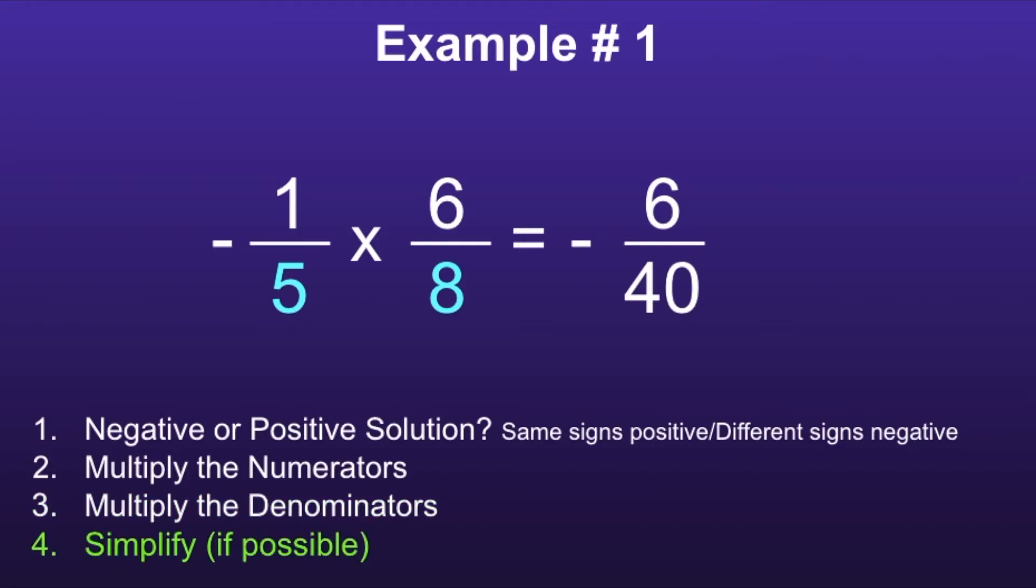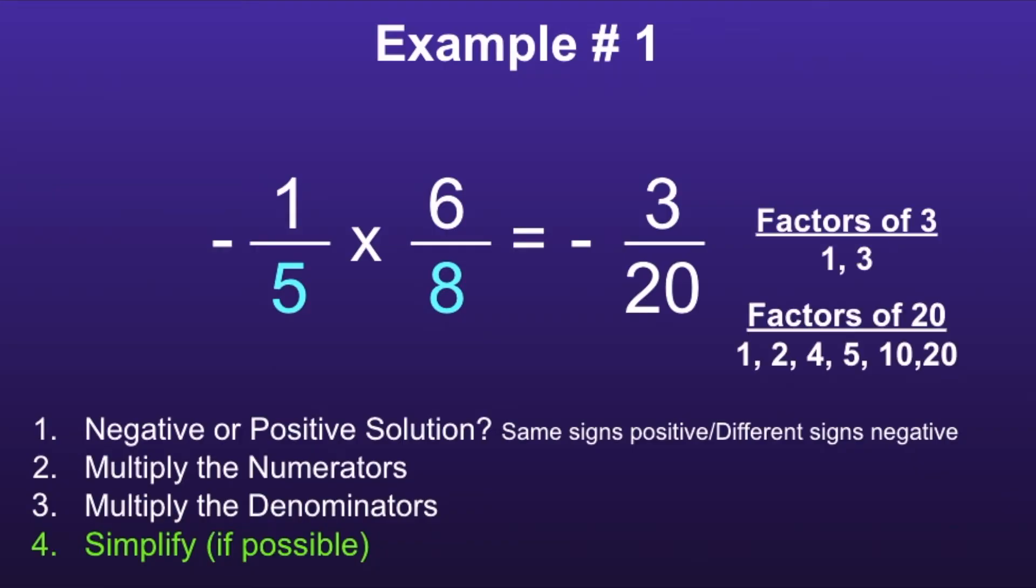And finally, step four: simplify if possible. Since both six and forty are even numbers, I know that I can divide by two. Six divided by two is three, and forty divided by two is twenty. So we can simplify six over forty to three over twenty. If we pull up the factors of three and twenty, we can see that there are no common factors, which means negative three over twenty is the final simplified answer.